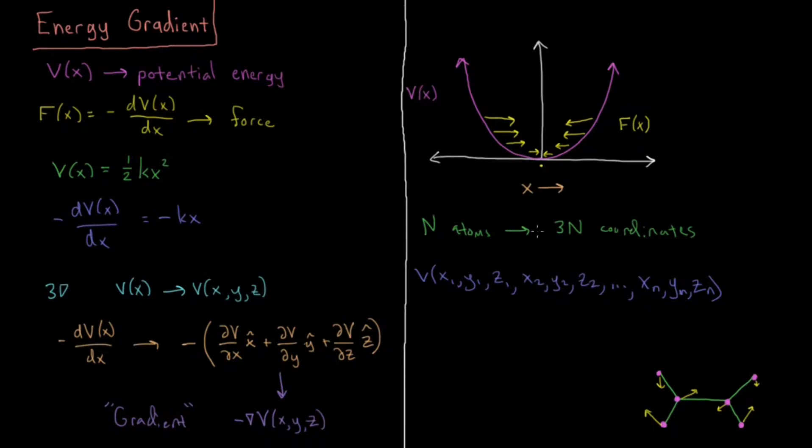We could say V of x1, y1, z1 could form a vector called r1, x2, y2, z2, a vector called r2, all the way up to xn, yn, zn, a vector rn.